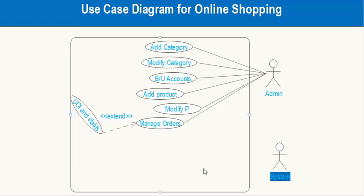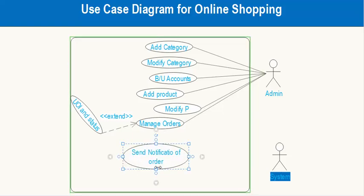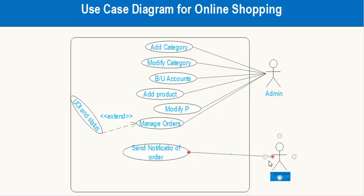What can the system do? The system can notify us — it can send an order notification. Let's create that use case: 'send notification of order'.